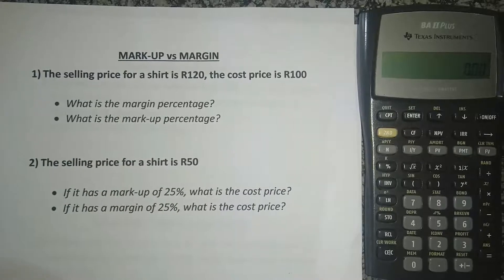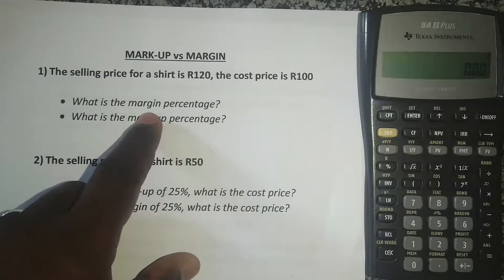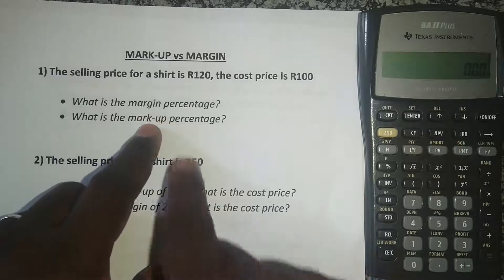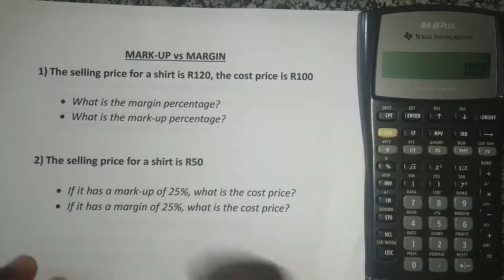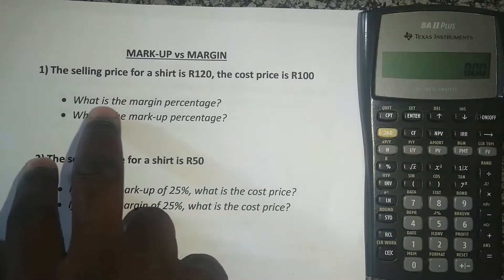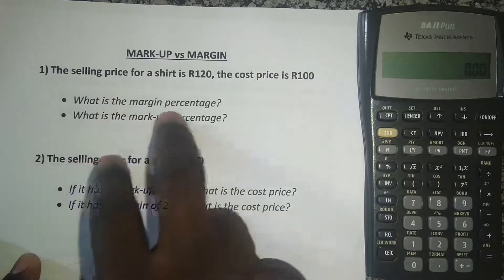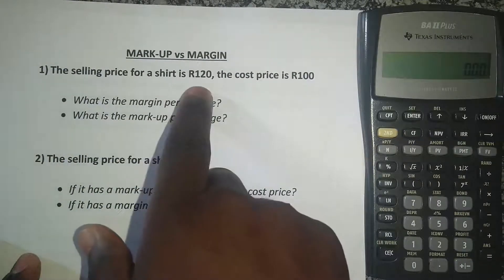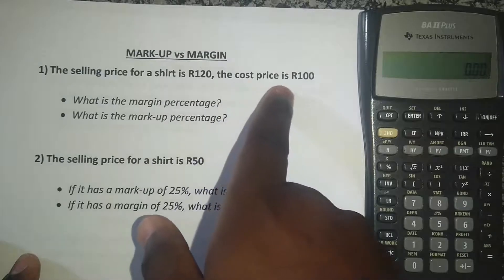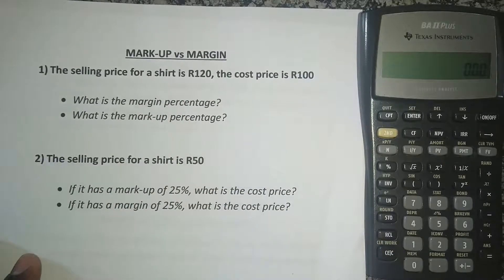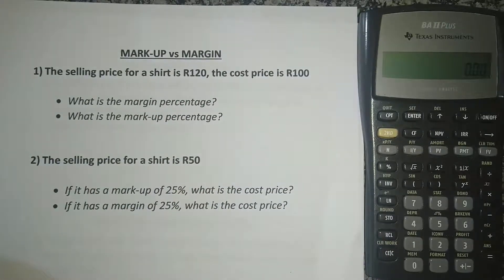Now with this specific calculator, there are two ways you'll do it. For markup, you'll do it one way, and for margins, you'll do it another way. It's actually very simple. So first of all, let's calculate what the margin percentage is. If the selling price for a shirt is 120 Rand and the cost price is 100 Rand, what is the margin percentage? Here's how you do the margin.